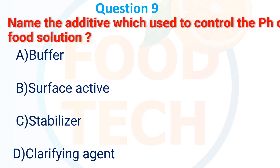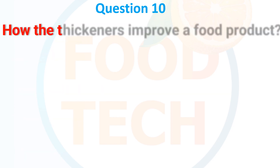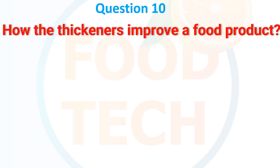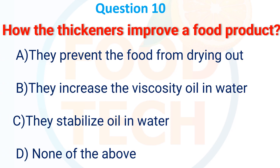Name the additive which is used to control the pH of a food solution. A. Buffer, B. Surface active agent, C. Stabilizer, D. Clarifying agent. The answer is A. Buffer.